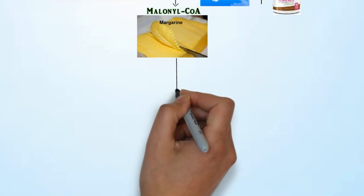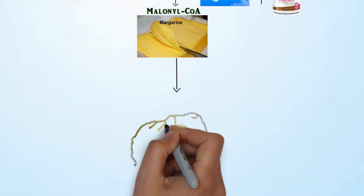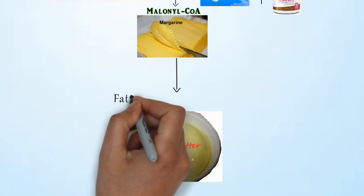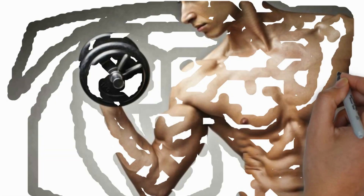Finally, malonyl CoA turns into a fatty acid — for example, palmitate, which is a 16-carbon chain. To remember: the lemon drips its juice onto the anchor butter, converting it into margarine, ultimately resulting in fatty acid synthesis.